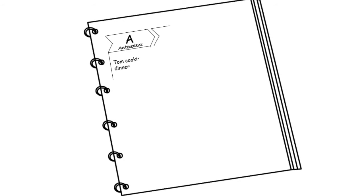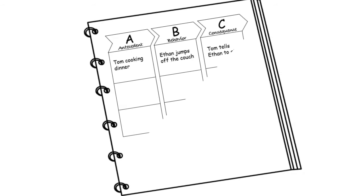Tom made a note on the ABC data sheet the BCBA left behind for him. He wrote down the antecedent, behavior, and consequence, then set the paper aside until the behavior happened again.